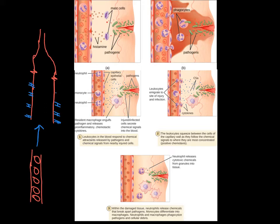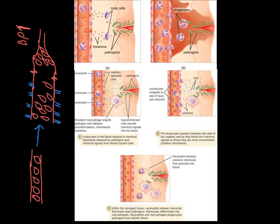Vasodilation means you have more blood coming in; vasoconstriction means you have less blood going out. So local blood pressure is going to increase significantly — just in this area. Systemically, blood pressure will go down, but in this area you've got more blood coming in and less going out, which is going to increase the pressure — it's going to blow up the balloon, so to speak.